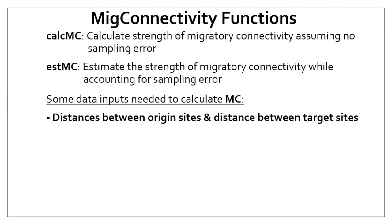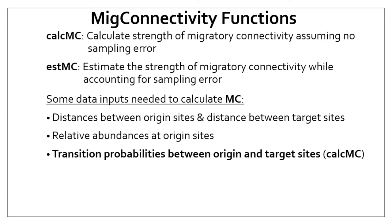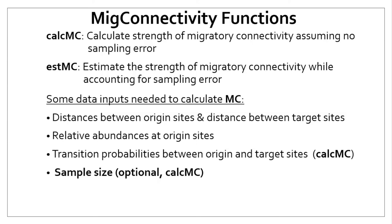Here are the data inputs needed to use these functions. First, you need to define origin sites and target sites. You then need the distances between each origin site and the distances between each target site. You'll also need the relative abundance found within each origin site. When using the CalcMC function, you need to specify transition probabilities between each origin and target site — we call this psi in the package. Additionally, providing the sample size is optional when using CalcMC to correct for small sample sizes.